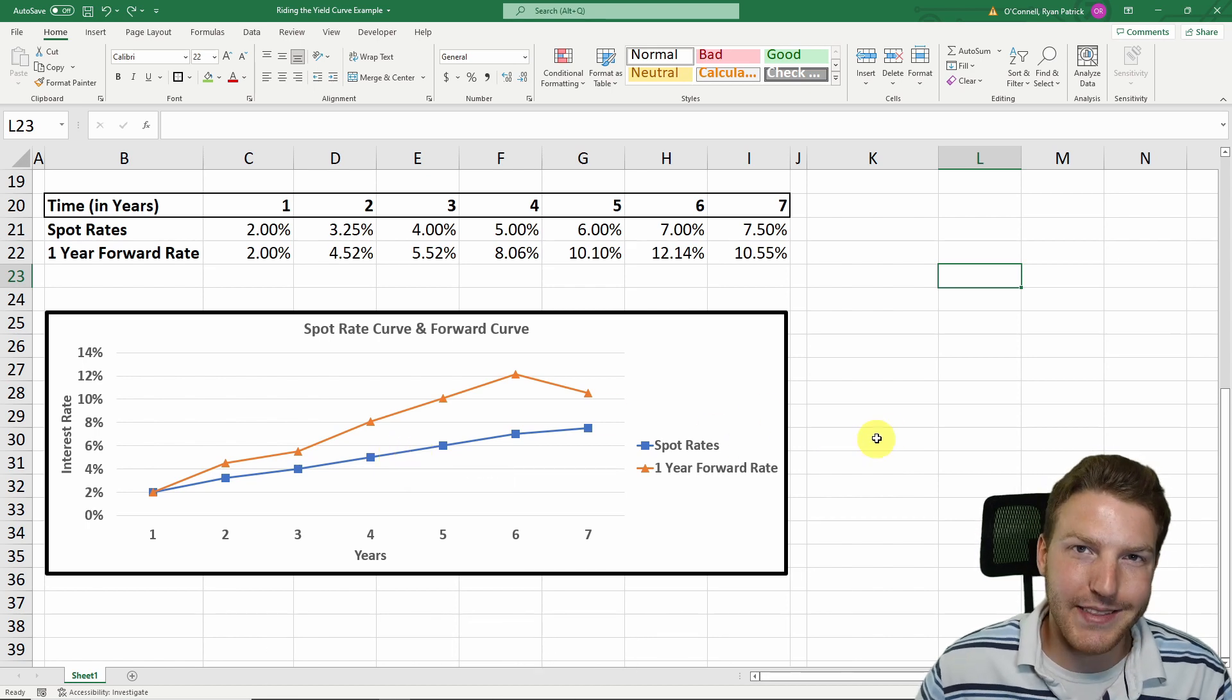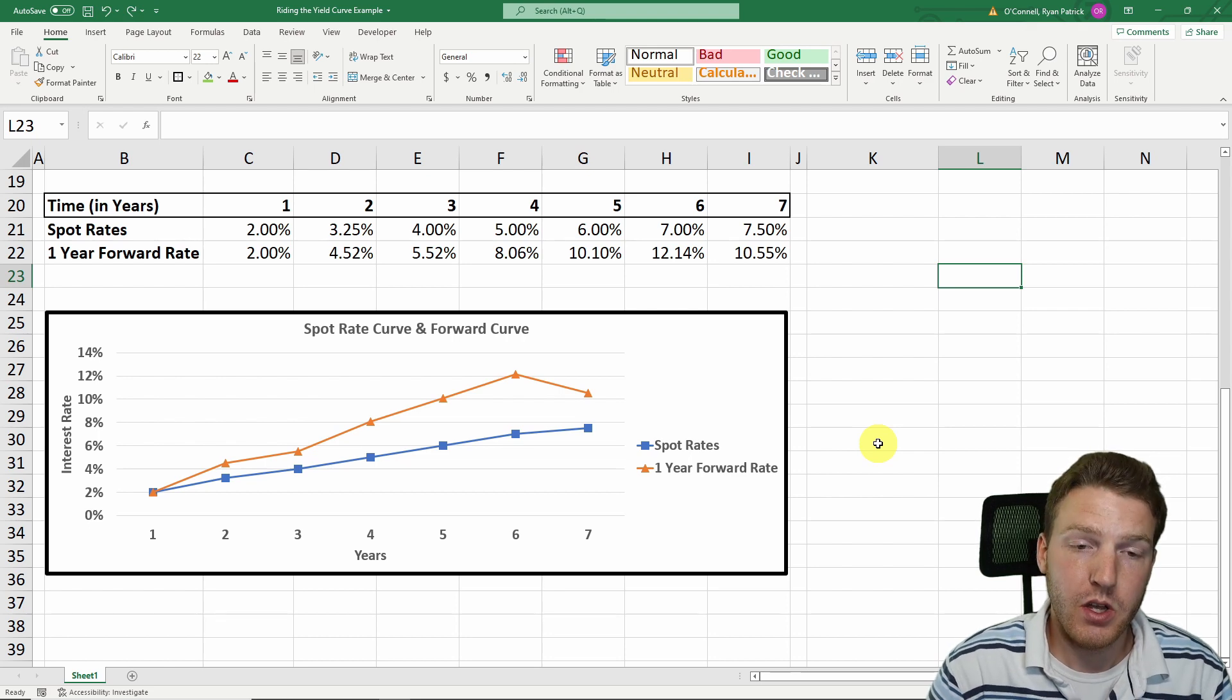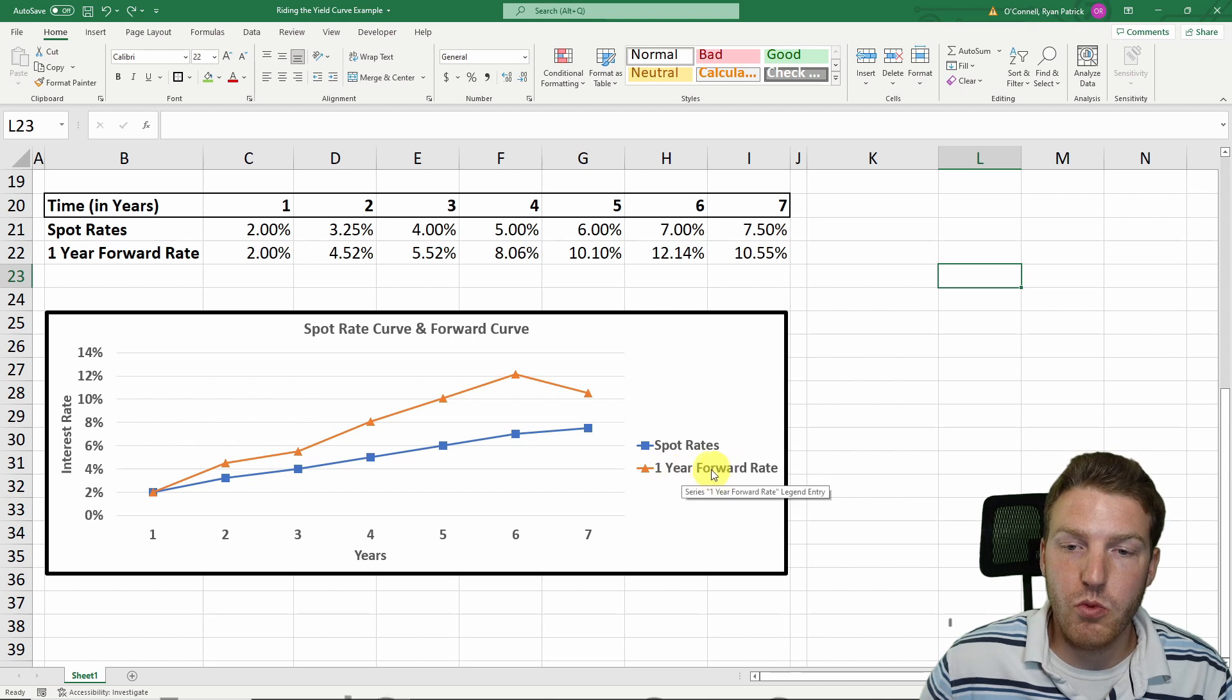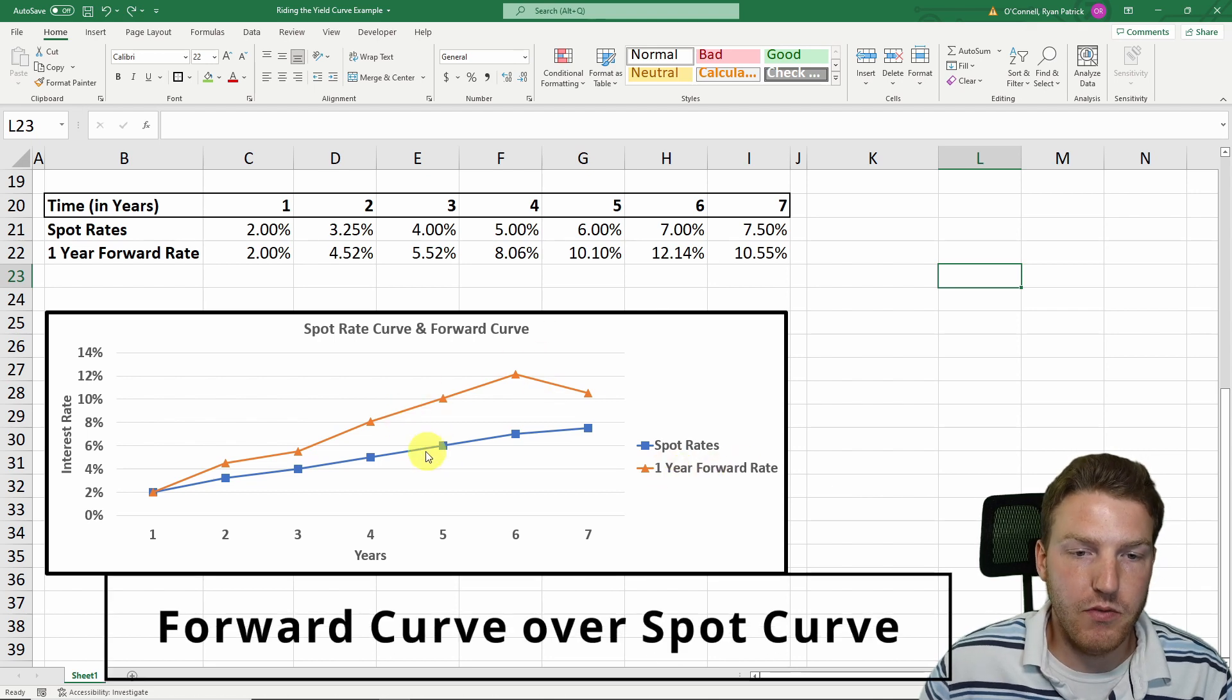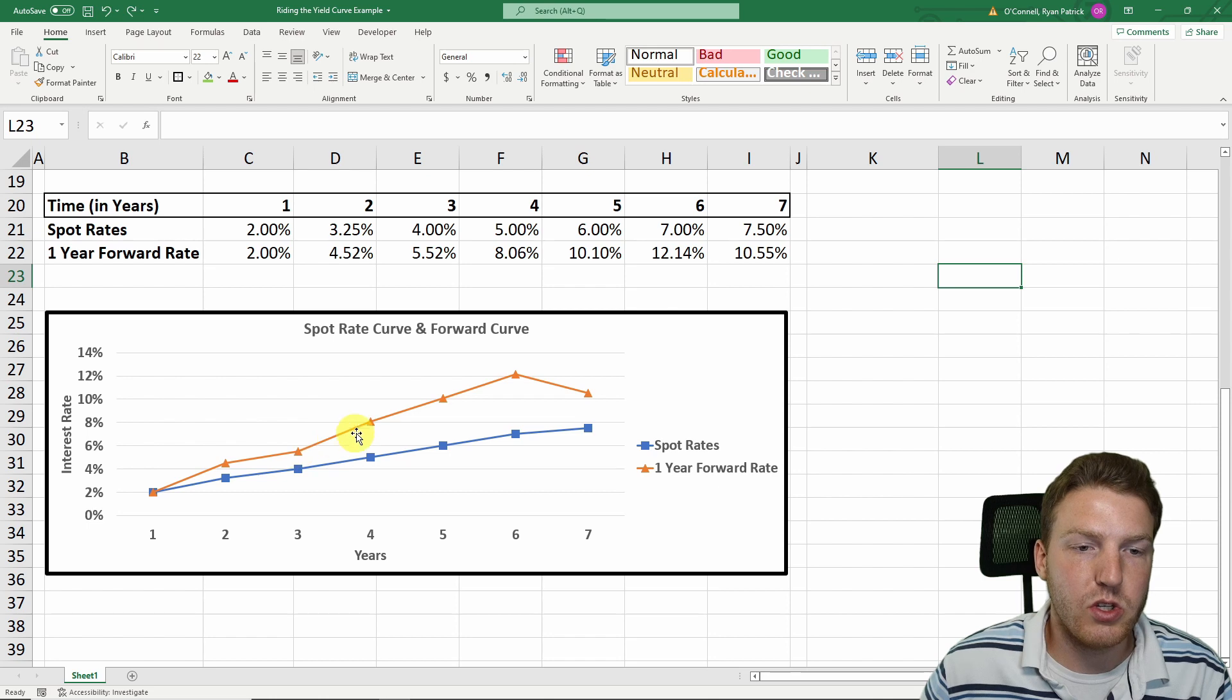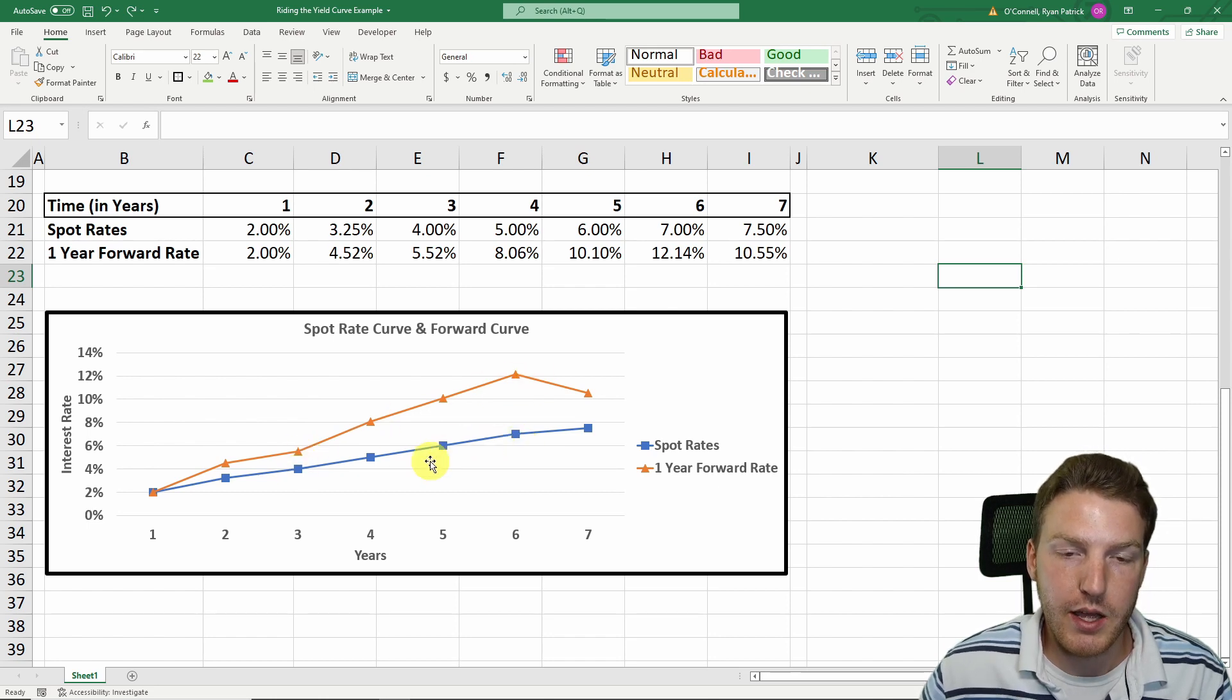In order to ride the yield curve, you do need an upward sloping spot rate curve. Because you need the forward curve to be above the spot rate curve. We need this orange line to be above the blue line.